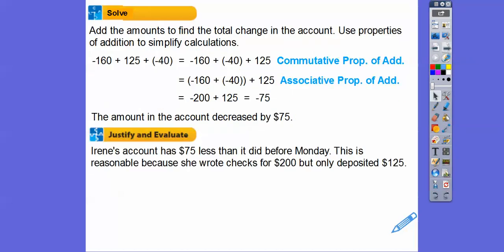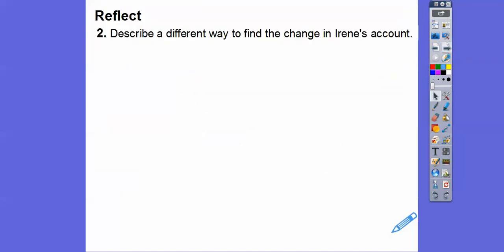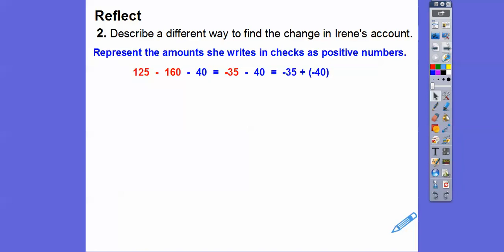Irene's account has $75 less than it did before Monday. That's a reasonable answer because she wrote checks that added up to $200 but only deposited $125, which has a difference of $75. Describe a different way to find the change in Irene's account. We can represent the amount she writes in checks as positive integers. $125 is how much she deposited, and then we subtract that $160 and subtract $40. $125 plus negative $160, we subtract them, we get negative $35. Negative $35 minus $40 is the same as negative $35 plus negative $40, which is negative $75, a decrease of $75.